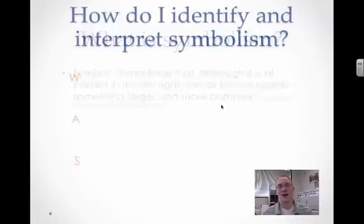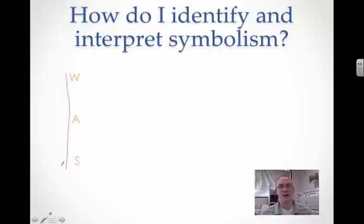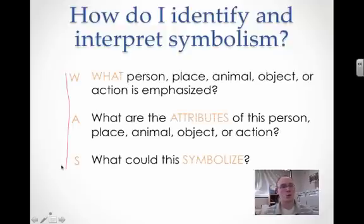So how do we identify and interpret symbolism? I want to go ahead and use this acronym to help us do that. The acronym is WAS. W-A-S. Here's what those stand for. W is for what person, place, animal, object, or action is being emphasized.